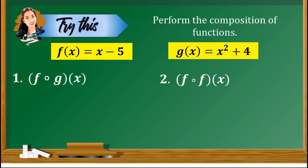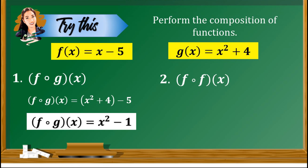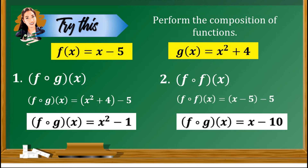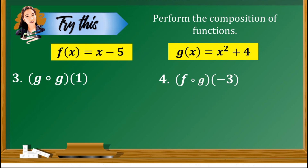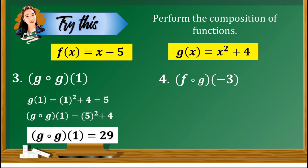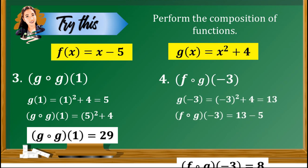Now apply what you have learned in the discussion. You may pause the video to answer the following items. Let's check our work. Item number 1, f∘g(x): the answer is x squared minus 1. Item number 2, f∘f(x): the answer is x minus 10. Item number 3, g∘g(1): the answer is 29. Item number 4, f∘g(−3): the answer is positive 8.